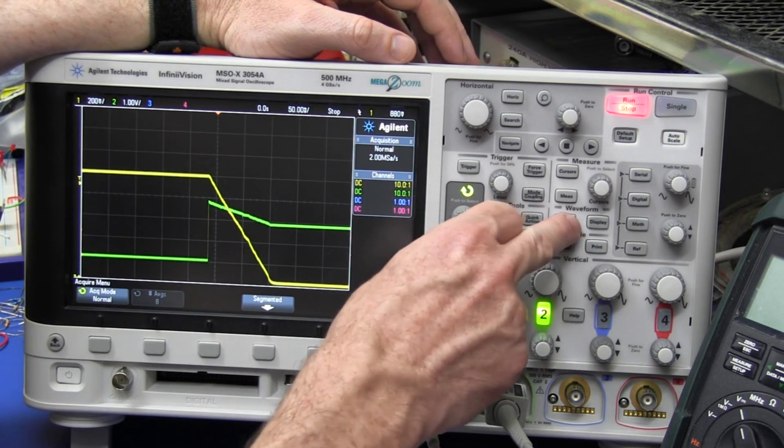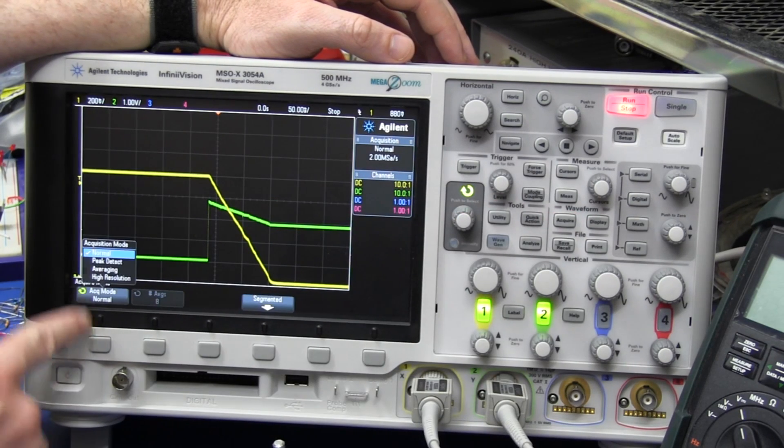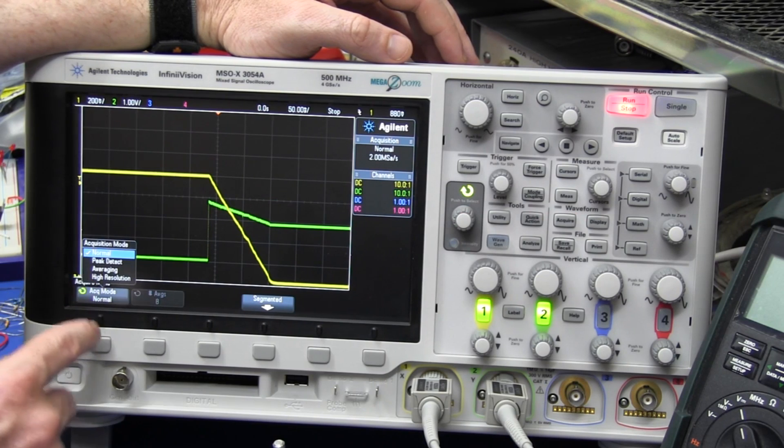Now, the high resolution mode, if you go to acquire down here, it's got normal mode, peak detect, averaging, and high resolution.